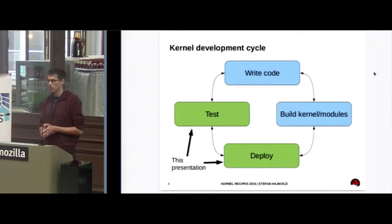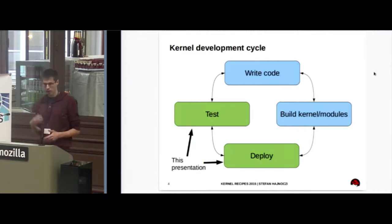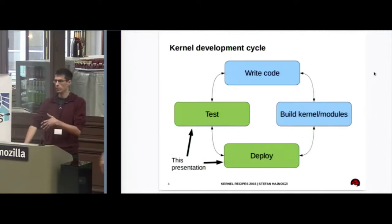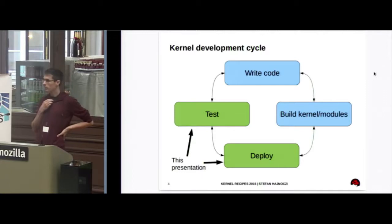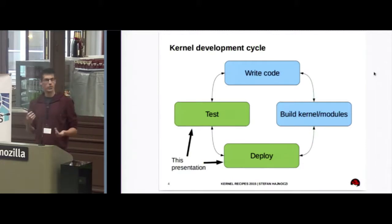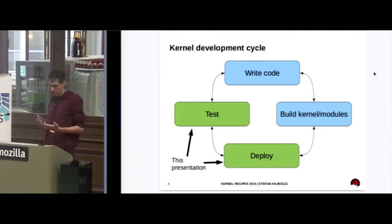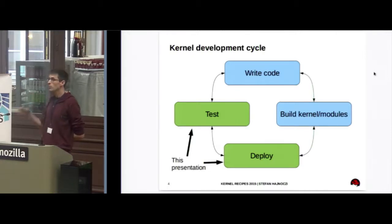Let's talk about the kernel development cycle. You write some code, probably working on some kernel module, you build it, and then you want to test what you've done. To deploy it, you might just load the module and exercise that device, or boot into a new kernel. With development cycles, it's important to be able to go back and forth between these stages quickly in order to have an effective development environment. If it's slow and painful to go between these steps, you can't iterate quickly, and whenever you make a mistake and have to go back, you lose a lot of time and it interrupts your flow.